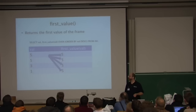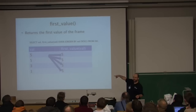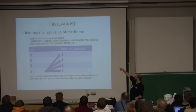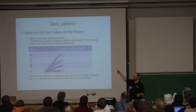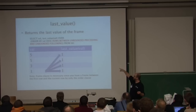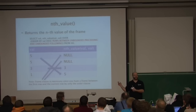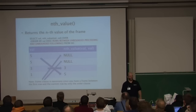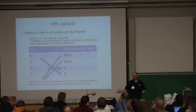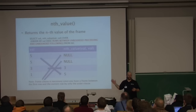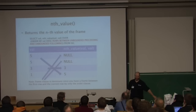First_value takes the first value in the frame. Last_value — you need to add some extra framing syntax, which will be on the slides — takes the last value in the frame. Nth_value — the SQL standards committee's version of humor — returns the nth value in the frame; I haven't seen anywhere yet where you'd actually need it, but for completeness it's there.